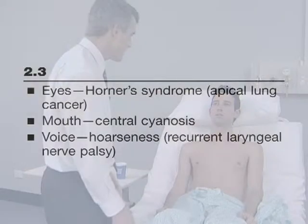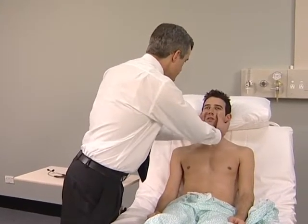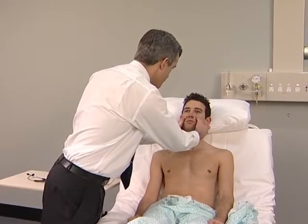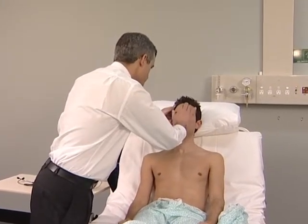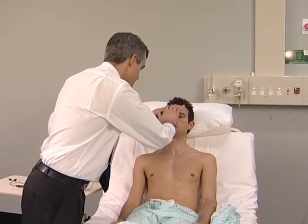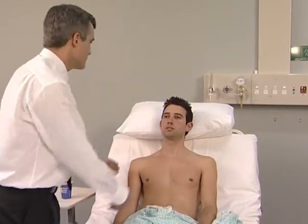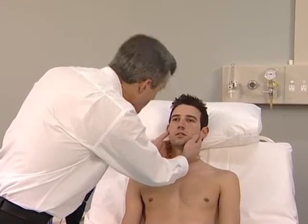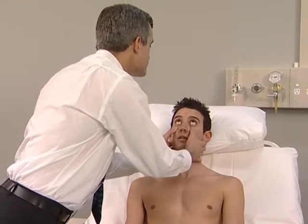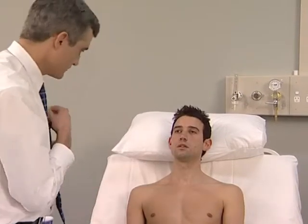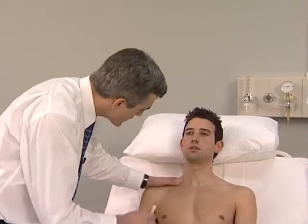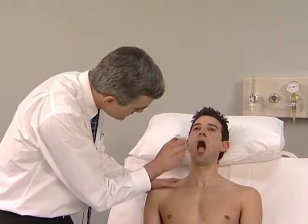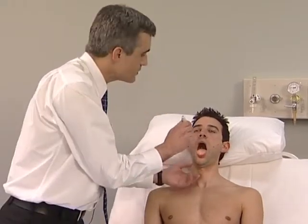Examination now moves to the face. Press the maxillary sinus for tenderness. Look carefully at the pupils and eyelids for ptosis — one eyelid lower than the other — and for the presence of a smaller pupil on that side. This usually means Horner's syndrome, which can be caused by an apical lung tumour. Look at the tongue and inside the mouth for central cyanosis. If the patient's voice sounded hoarse, get them to say a few words.